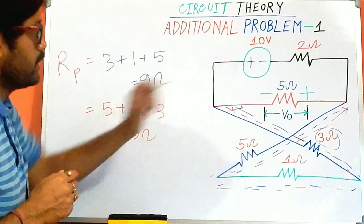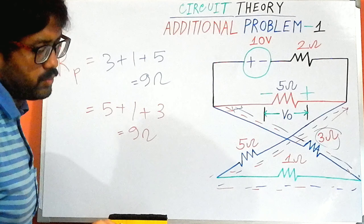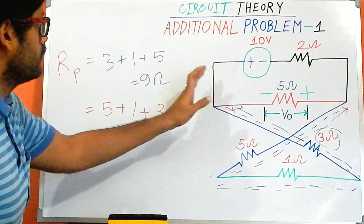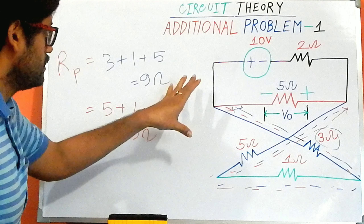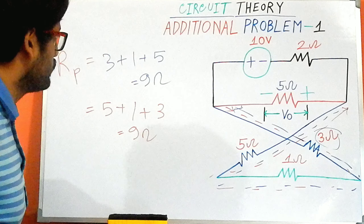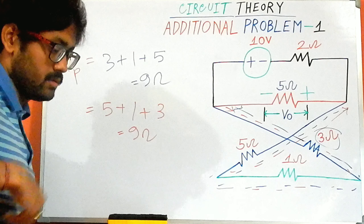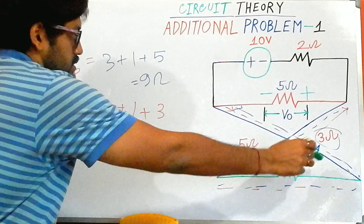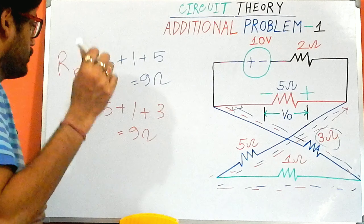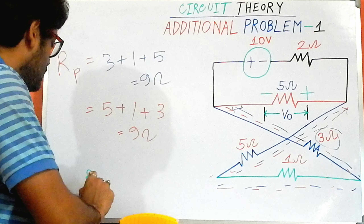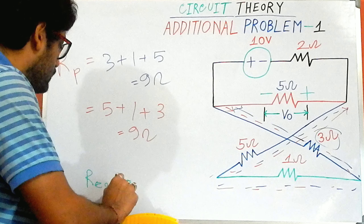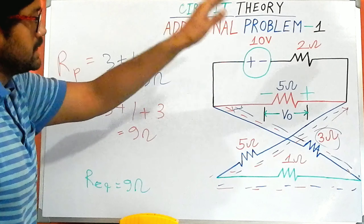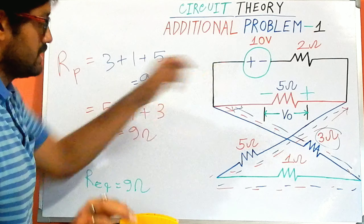Instead of drawing this circuit diagram again, I want to draw the equivalent circuit from it. The equivalent resistance for this path is R_equivalent = 9 ohm. I will erase the upper portion to draw the particular equivalent circuit for this circuit diagram.